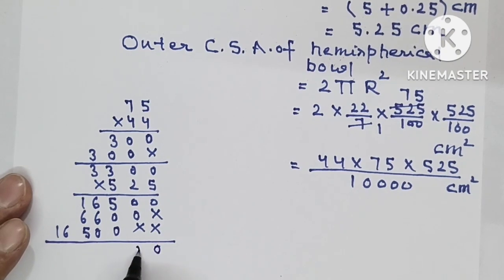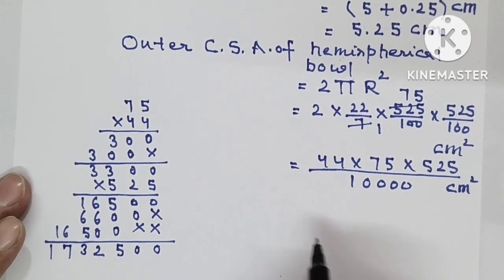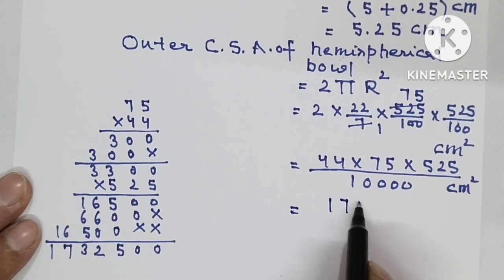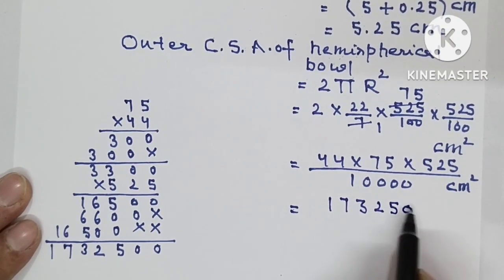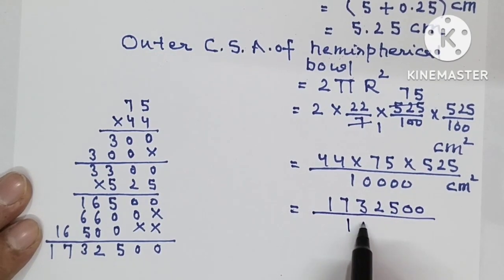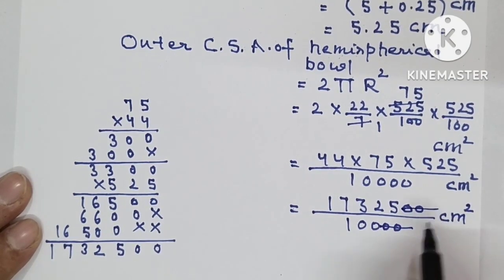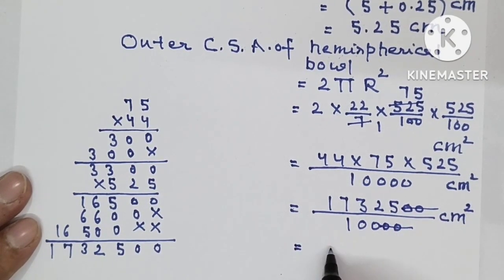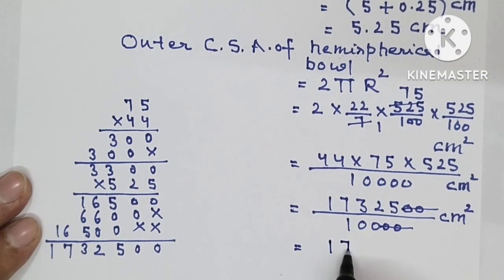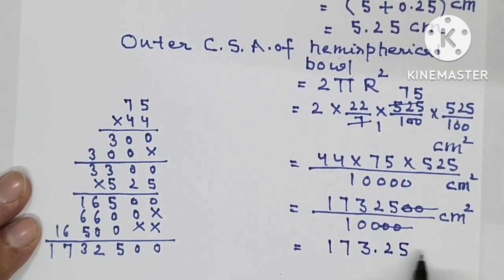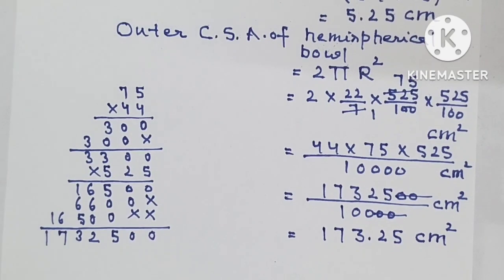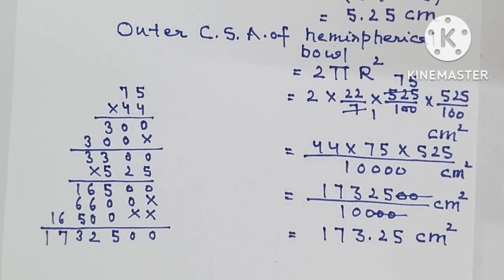So we have got 1732500 upon 10000 centimeter square. Two zeros cancel with two zeros and decimal will be two digits back, so it is 173.25 centimeter square. So this is the solution of question number 8. Hope you have understood it, thank you.